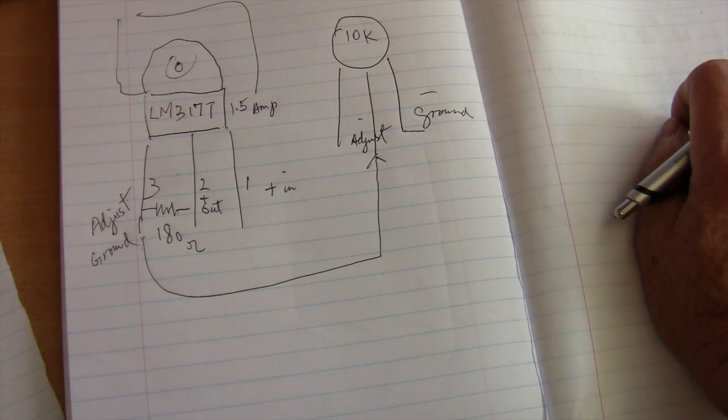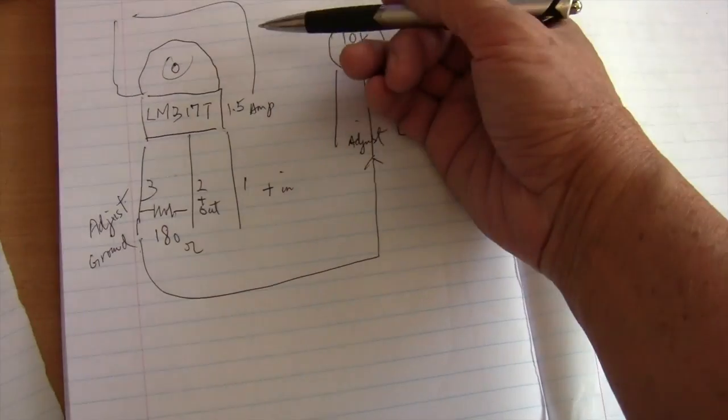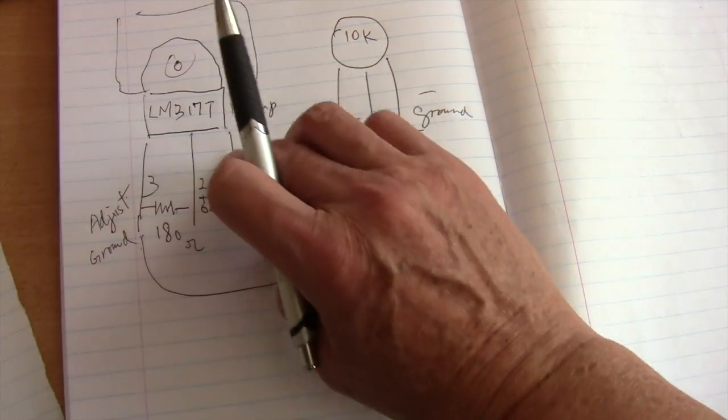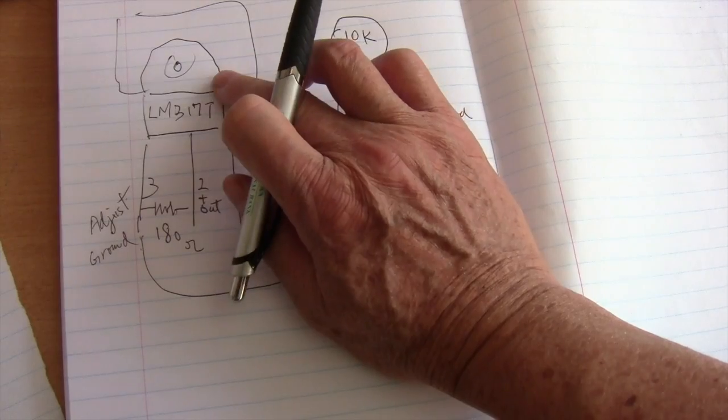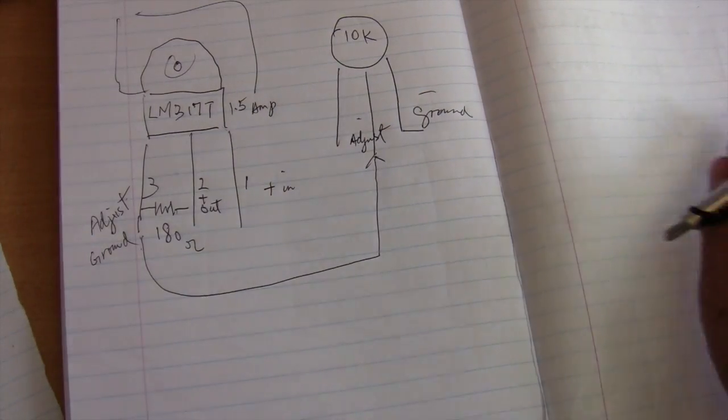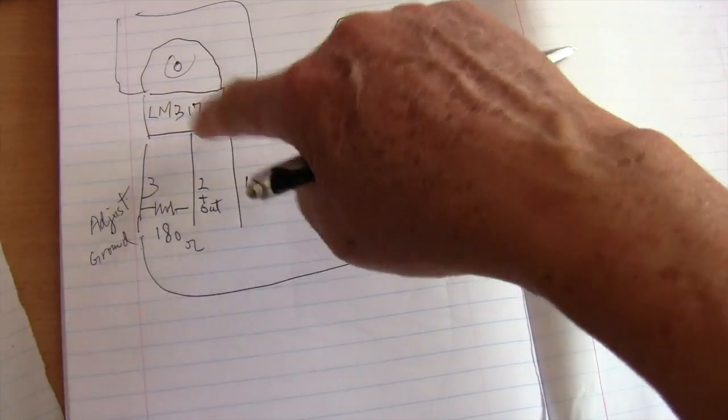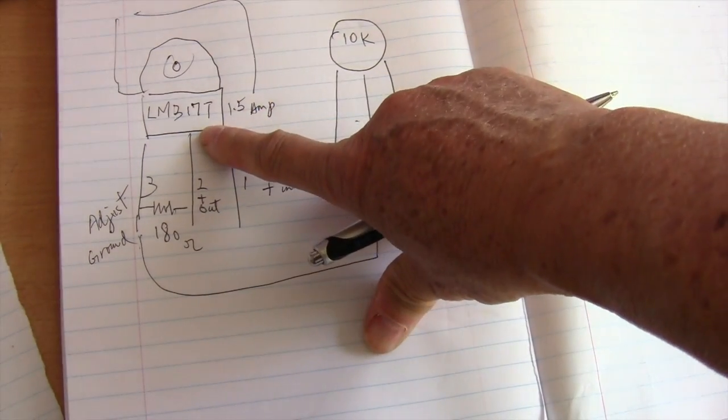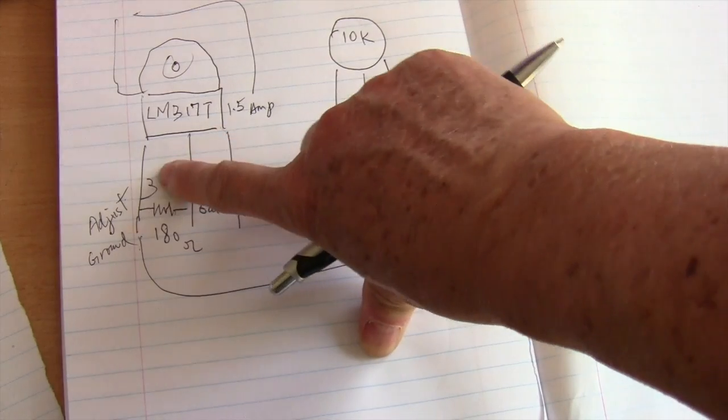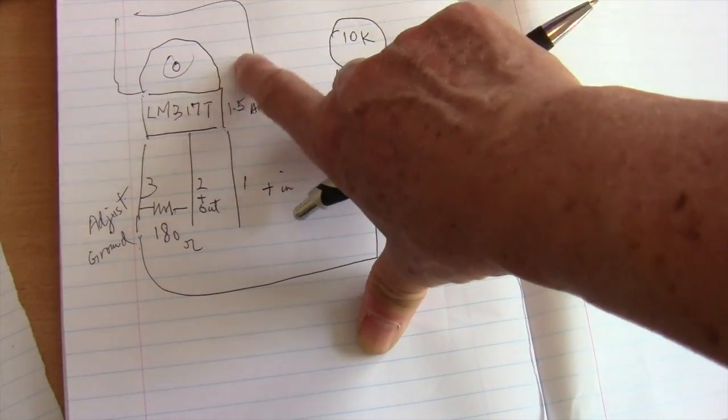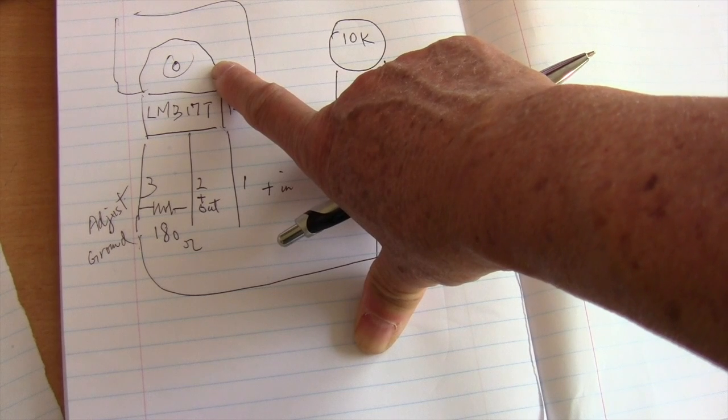Yeah, the more voltage that you regulate, the more heat this will generate. If you are using like an 18 volt solar panel and you're using this to charge a USB device and set it to 5 volts, then this will get pretty hot because your incoming is 18 volts.